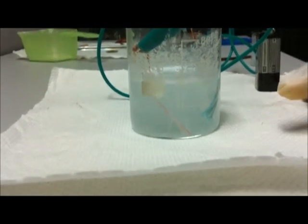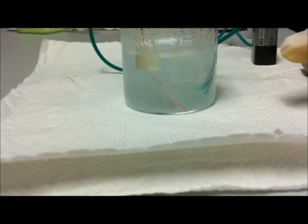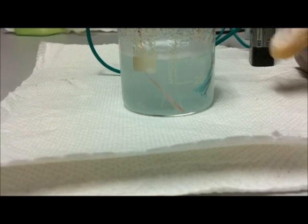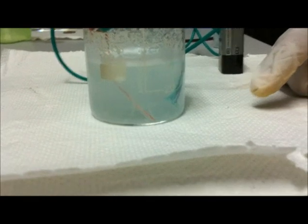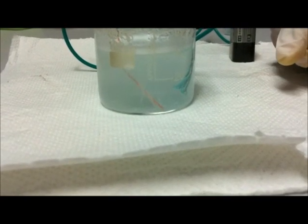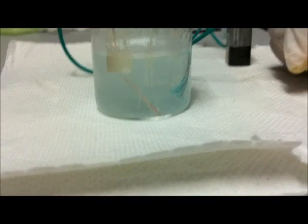So what's happening right now? First, at the negative electrode, the water is splitting into hydrogen and hydroxide. The hydrogen bubbles off as hydrogen gas. Hydrogen ions bubble off as hydrogen gas.